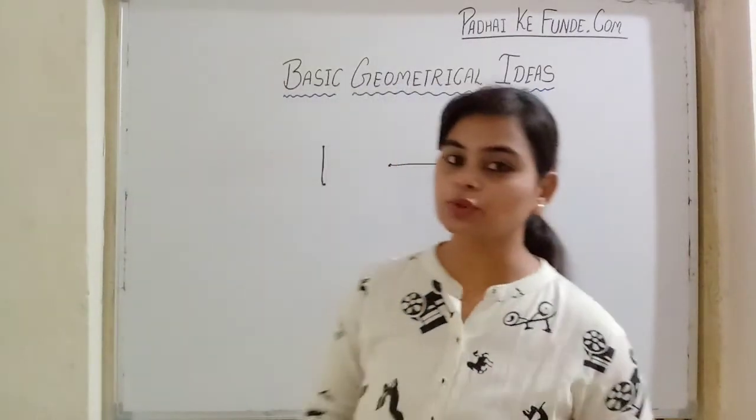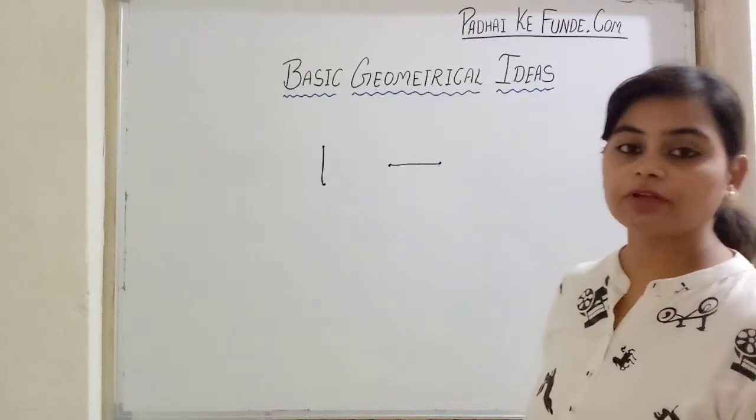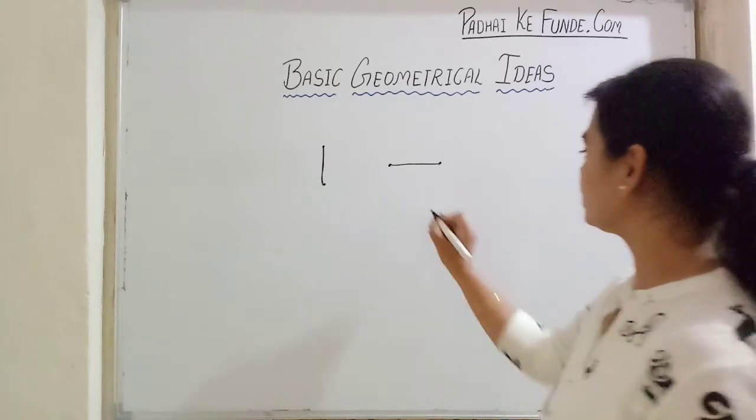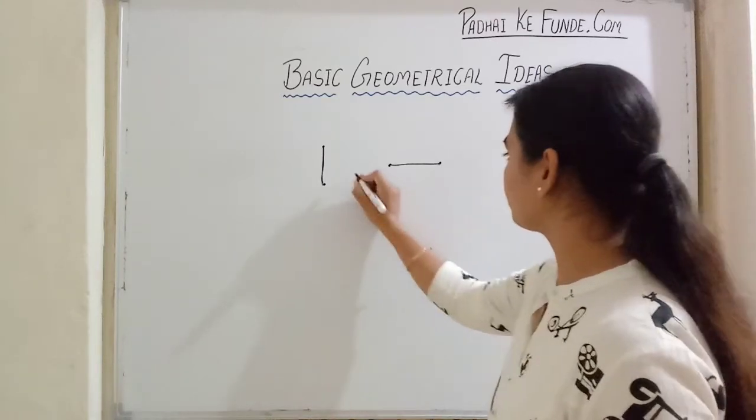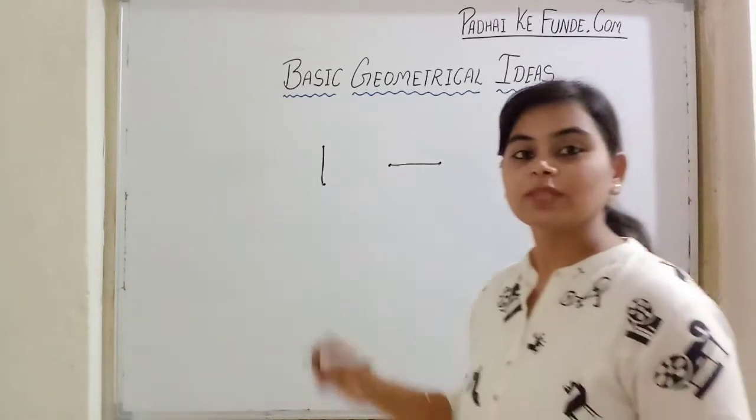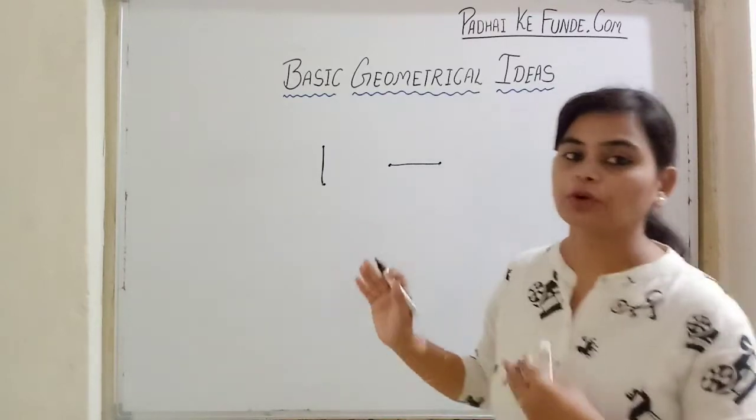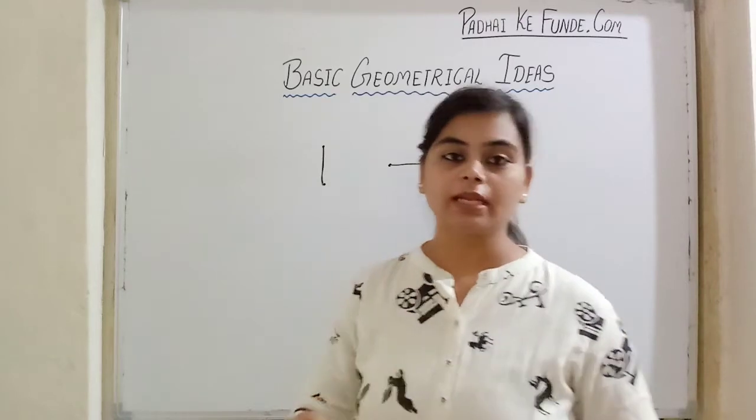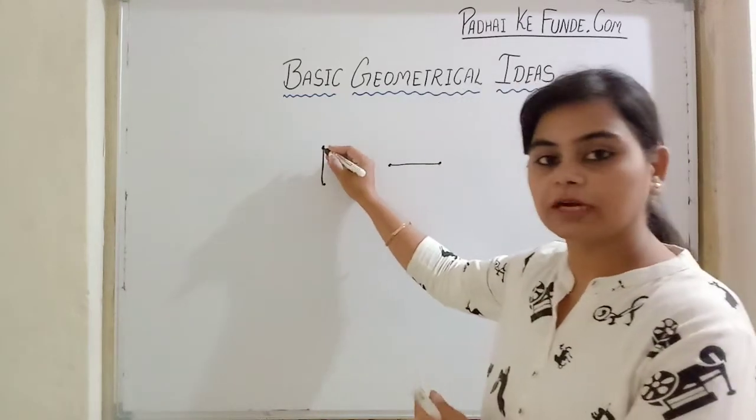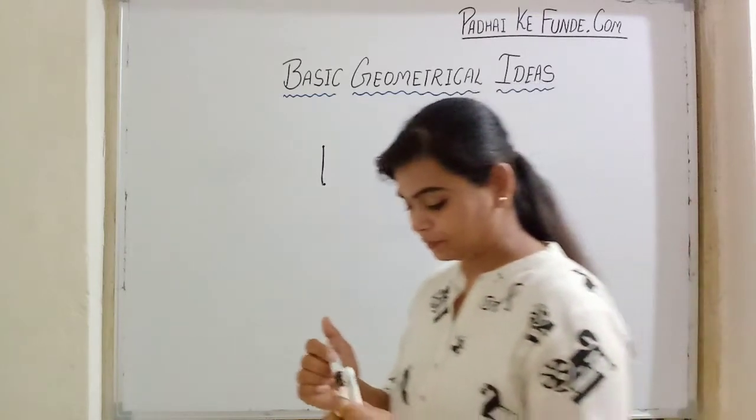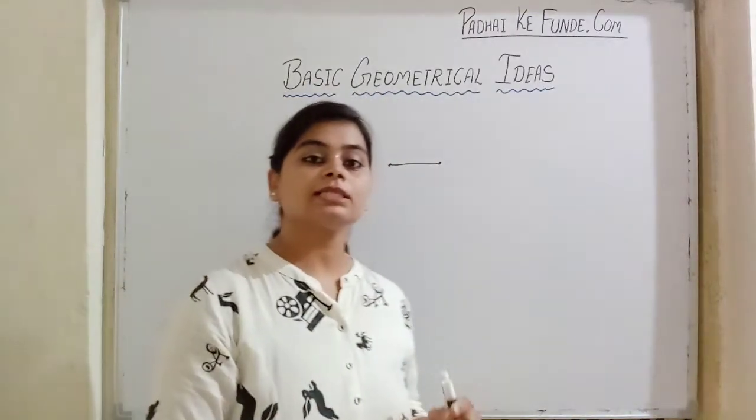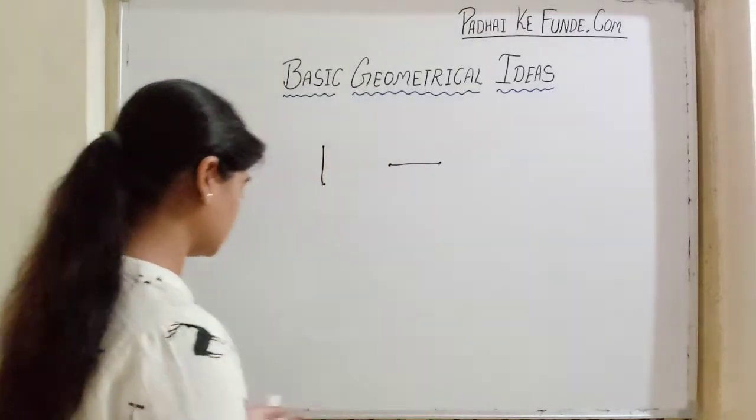So what was the use of these dots? If teacher doesn't give you dots and tells you draw a standing line, you will think what to do, from where to start. So copies for small children have dots to give them a proper position, to tell them you have to start from here and end here. These dots are called a point in geometrical terms.